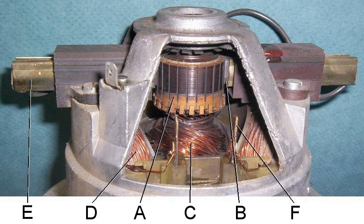A commutator is a rotary electrical switch in certain types of electric motors and electrical generators that periodically reverses the current direction between the rotor and the external circuit. It consists of a cylinder composed of multiple metal contact segments on the rotating armature of the machine. Two or more electrical contacts called brushes, made of a soft conductive material like carbon, press against the commutator, making sliding contact with successive segments as it rotates.